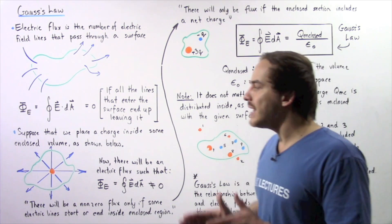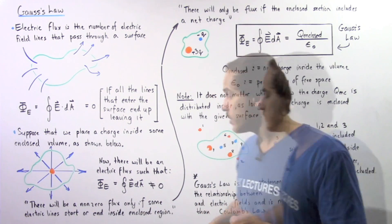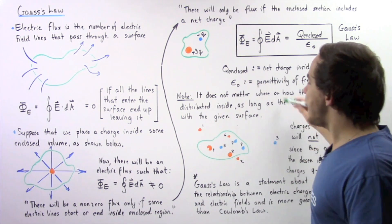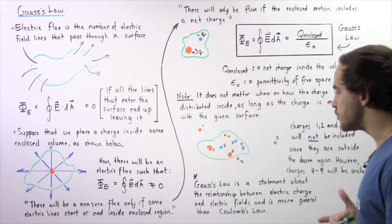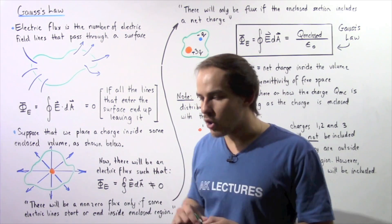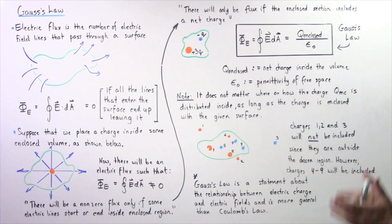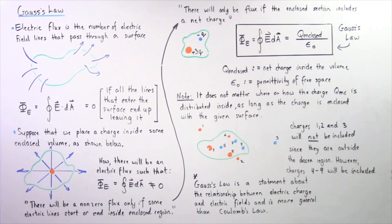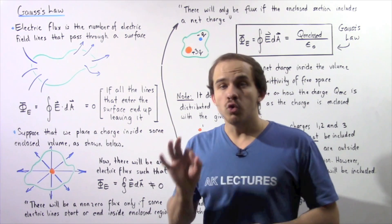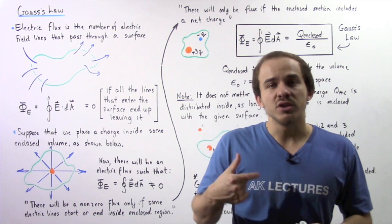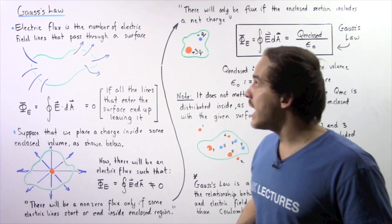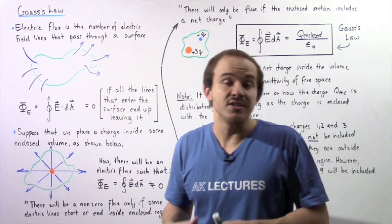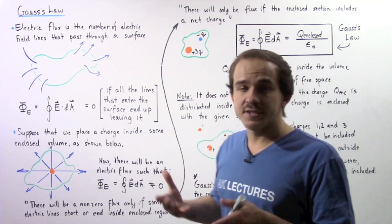We can redefine our chosen region to include charges 1, 2, and 3, so that new region will include all those charges. Gauss's Law is a statement about the relationship between electric charge and electric field lines, and it is a more general statement than Coulomb's Law. Coulomb's Law describes the relationship between electric fields and stationary point charges, whereas Gauss's Law is a more general statement that describes charges of different shapes and sizes.